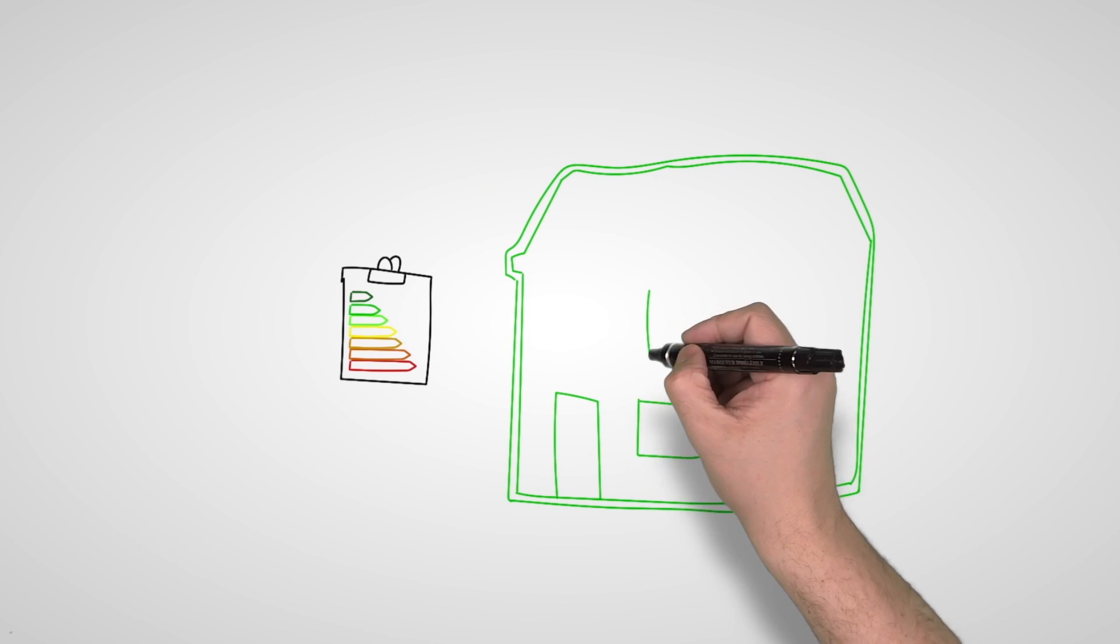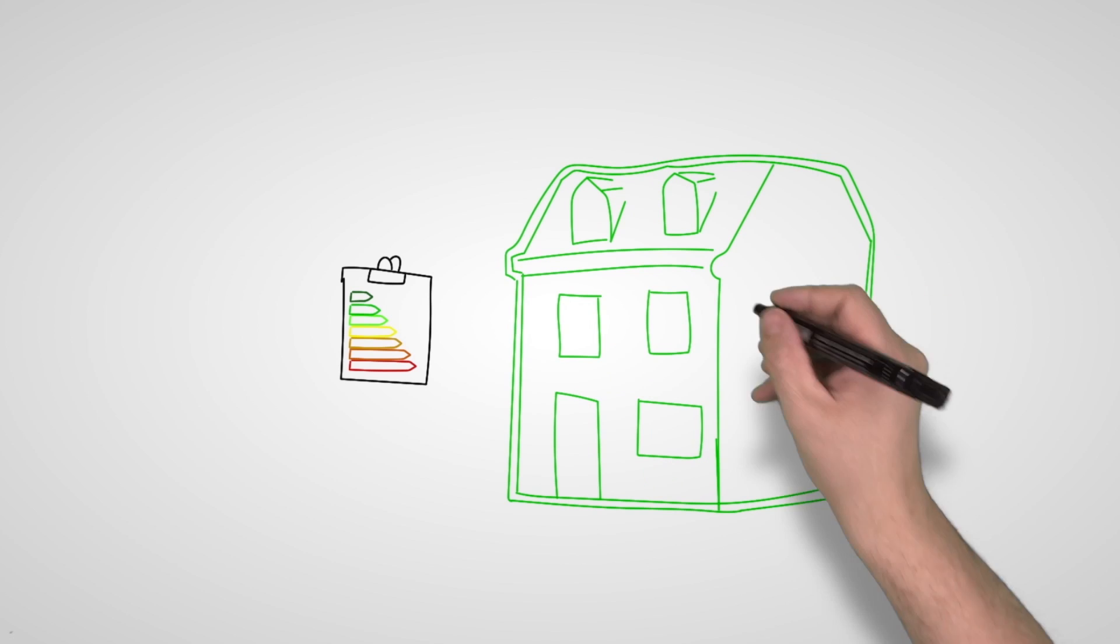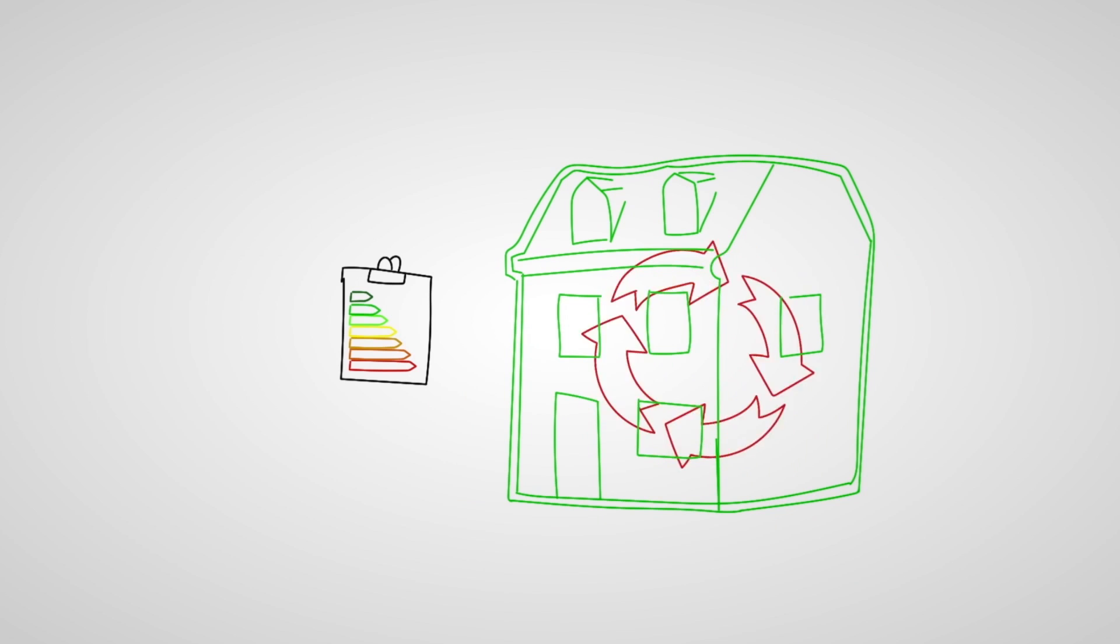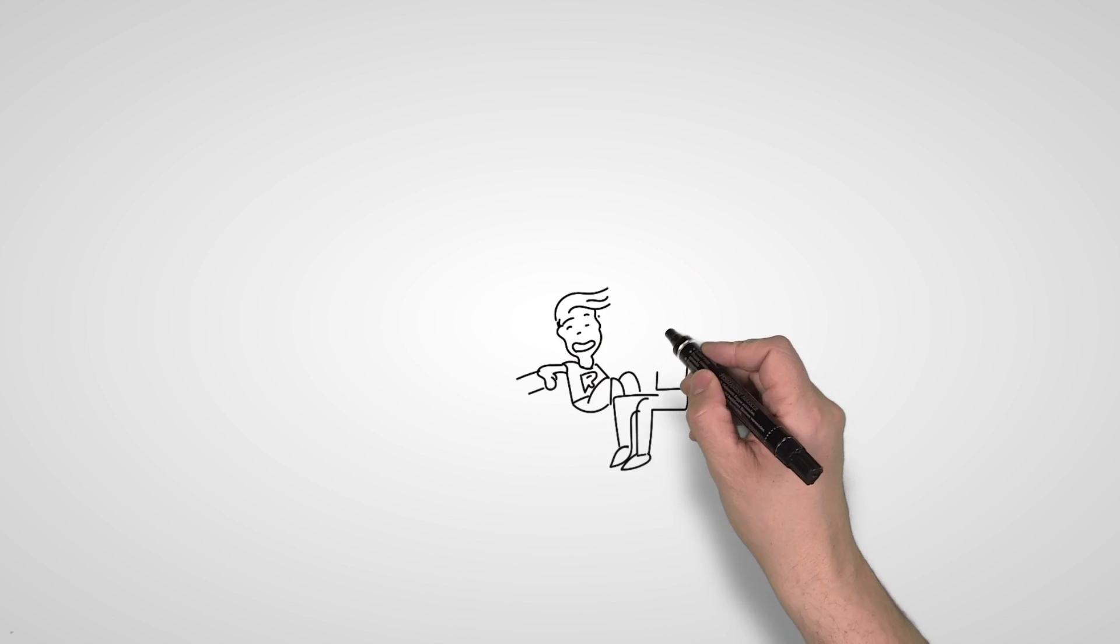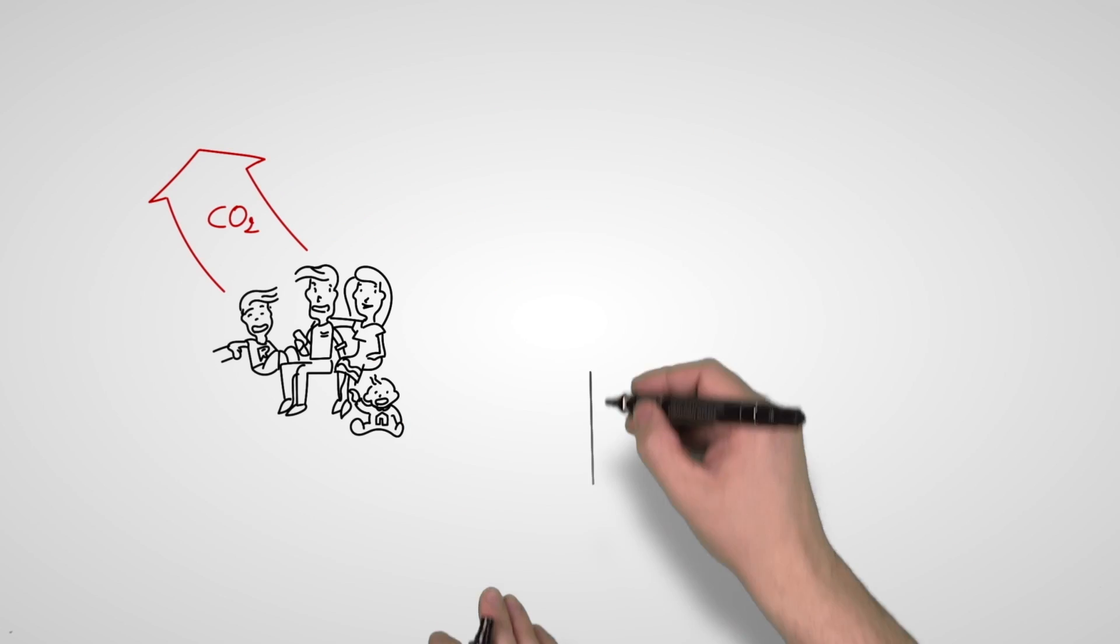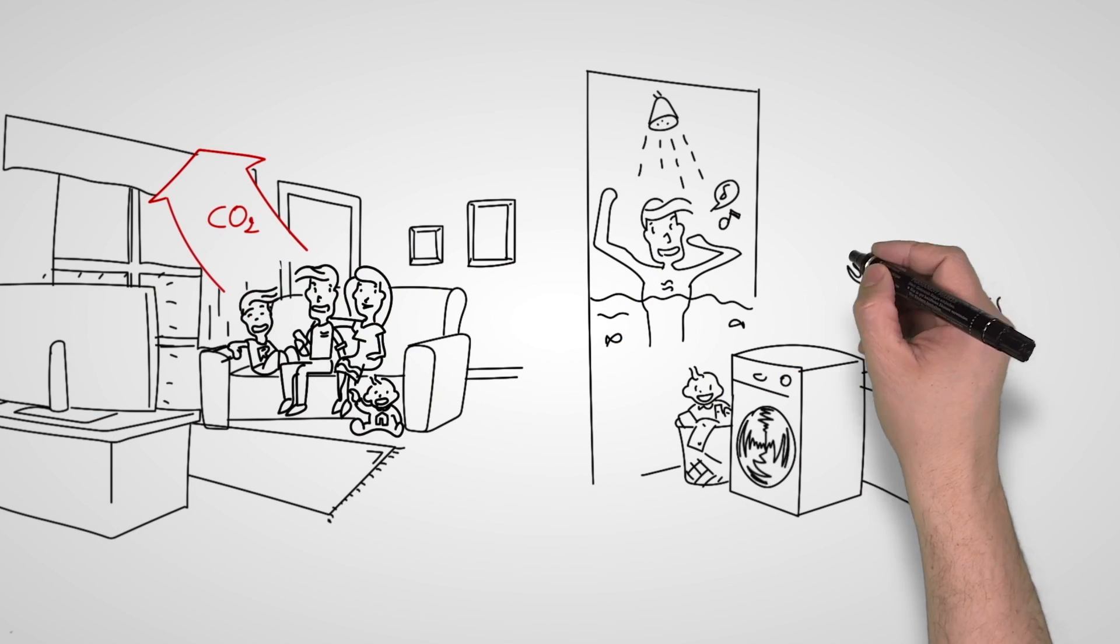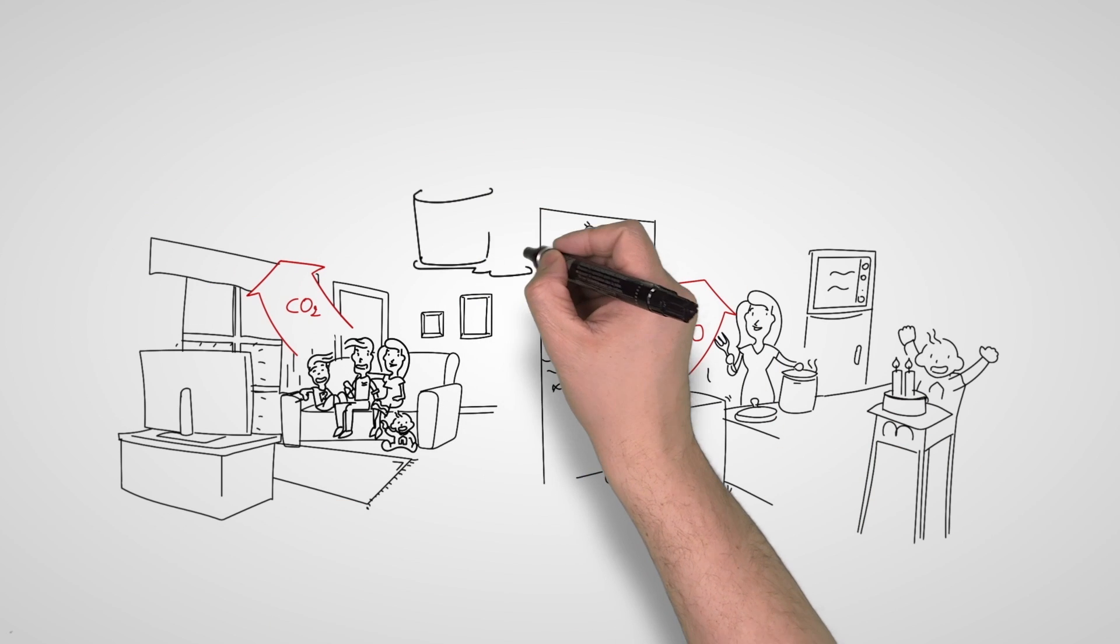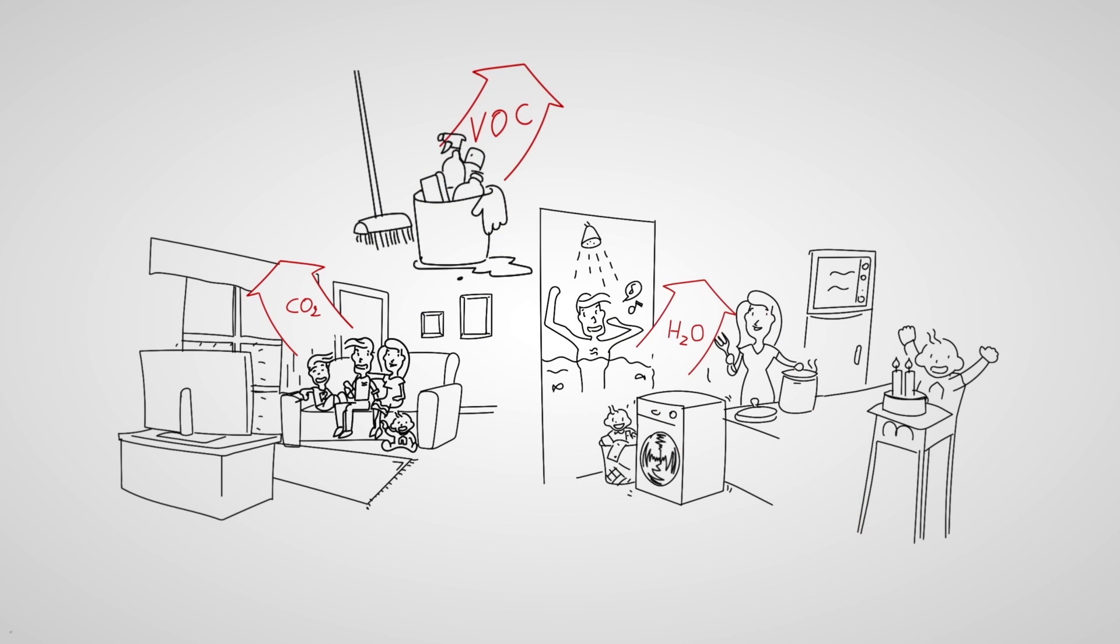But if you only focus on thermal comfort, then the indoor air remains trapped in the house. This results in poorer indoor air quality through all kinds of pollutants. Invisible polluted air is caused by excess carbon dioxide or CO2, water vapour H2O, and all sorts of chemicals coming from furniture, candles, paint, or detergents.